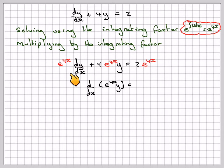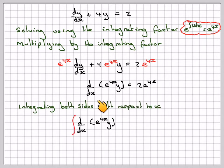This bit here, using the product rule, becomes d dx of e to the 4x times y, and this side will remain the same. So integrating both sides with respect to x, this integral of d dx, e to the 4x y dx is equal to the integral of 2e to the 4x dx.